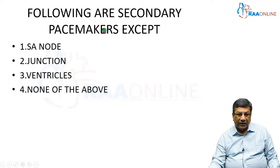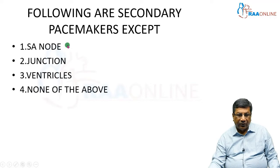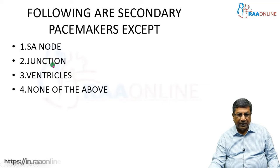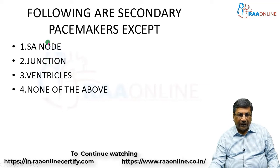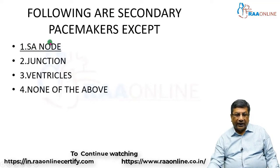The second question is: which of the following are the secondary pacemakers? Options: sinus node, junction, ventricles, or none of the above. The secondary pacemakers are the junction and the ventricles. The sinoatrial node is the primary pacemaker of the heart, not a secondary pacemaker. So the correct answer is the sinus node.